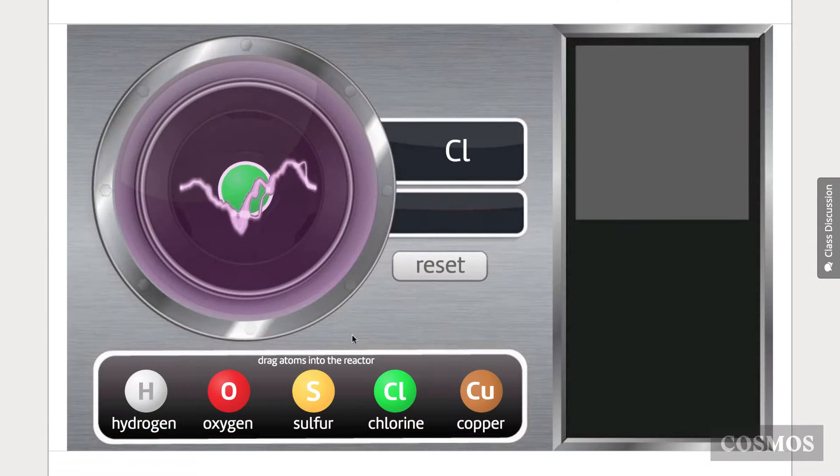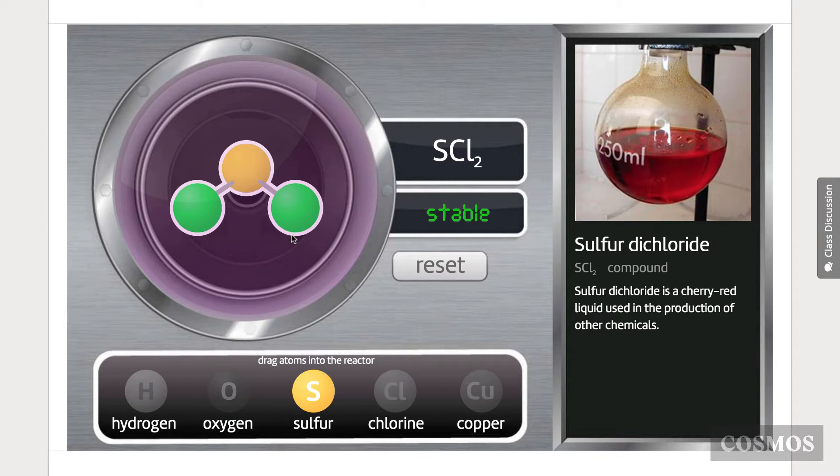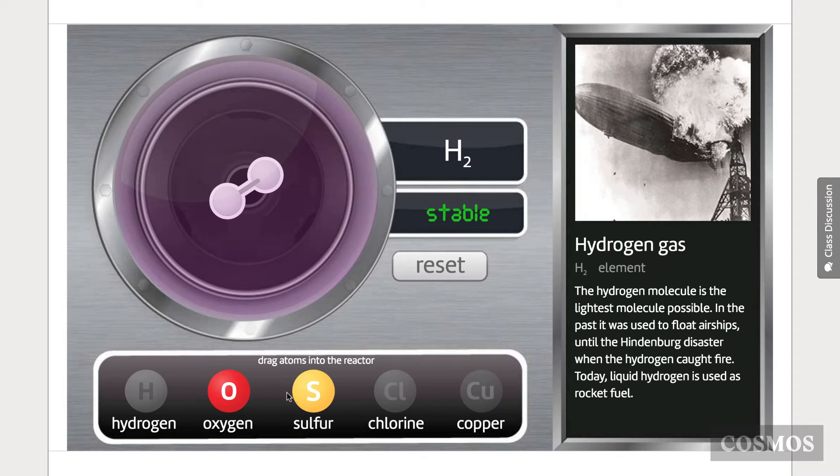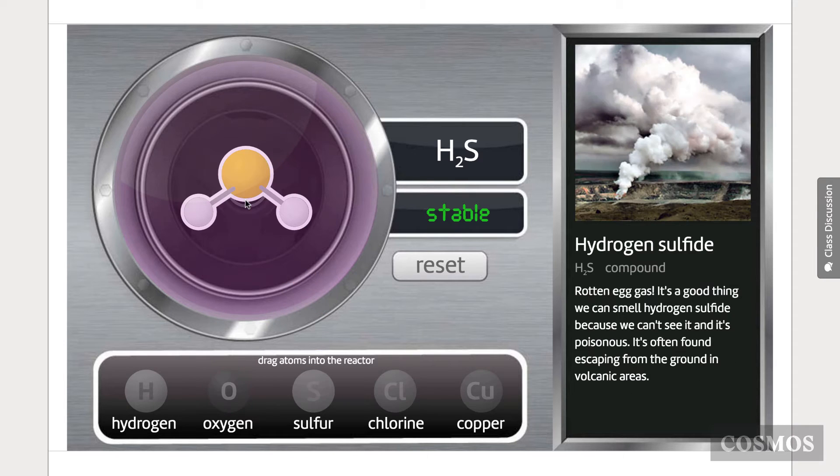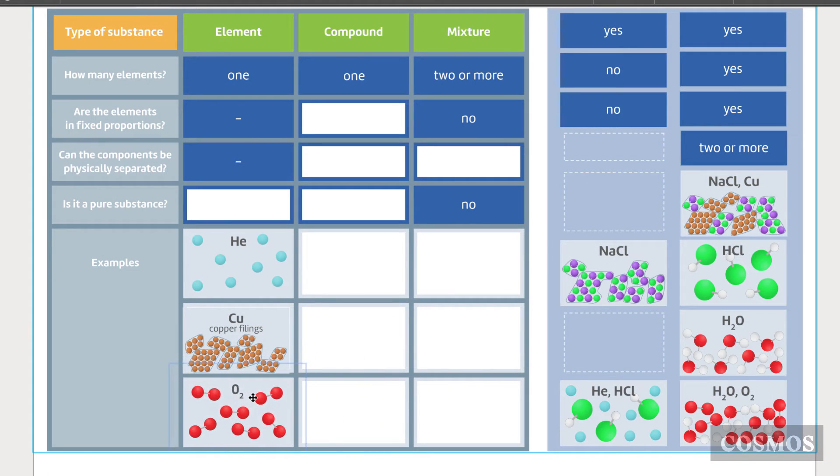In the compounds lesson, students get to mix and match a handful of elements to see what compounds they can get. It's fun, and drives home how the same elements can form different compounds, and how much the properties of compounds can differ from those of their constituent elements. A drag and drop exercise at the end of the lesson gives a good summary of the differences between elements, compounds and mixtures.